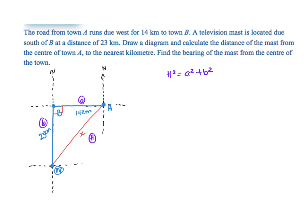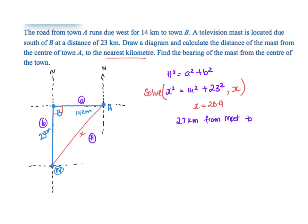Solving x squared equals 14 squared plus 23 squared, we get x equals approximately 26.9, so rounding to the nearest kilometer, the distance from the mast to town A is 27 kilometers.